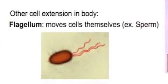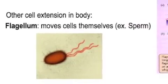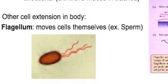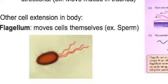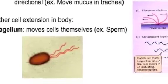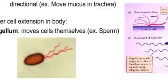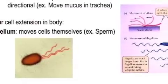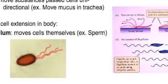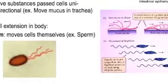The third type of cellular extension found in the body is the flagellum. Flagella move cells themselves forward. Our example is sperm — they have one tail, and that tail moves the whole cell forward.